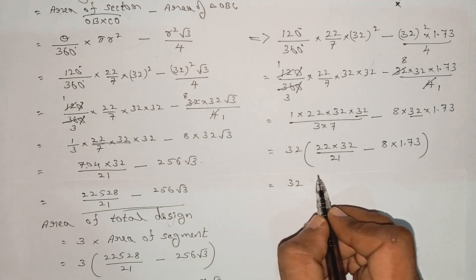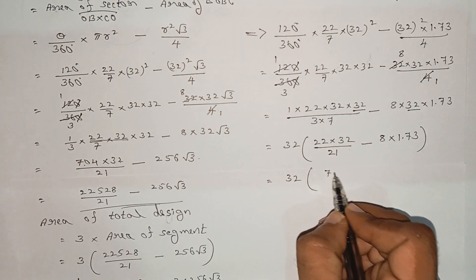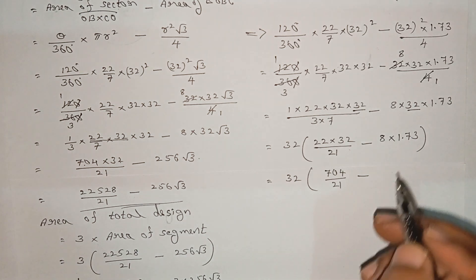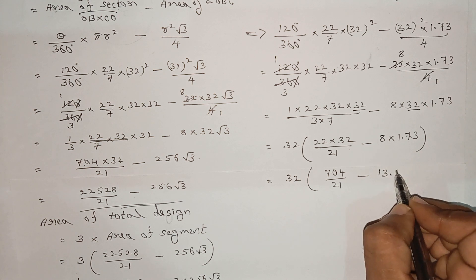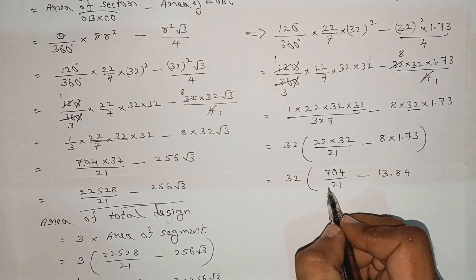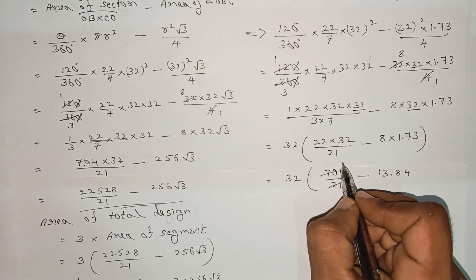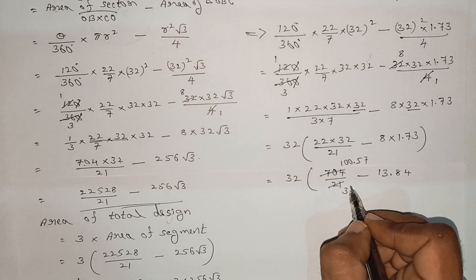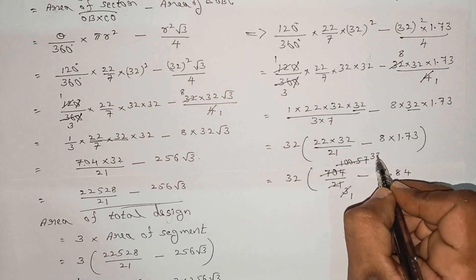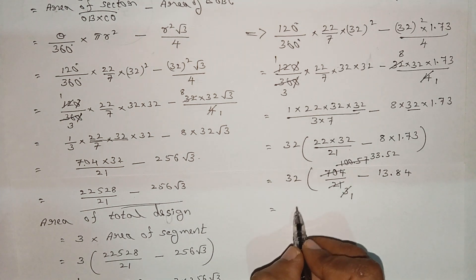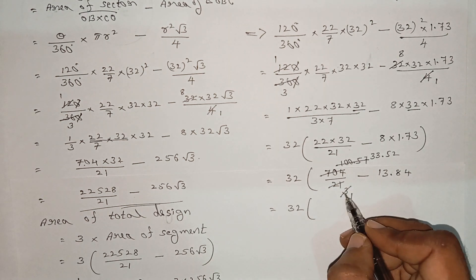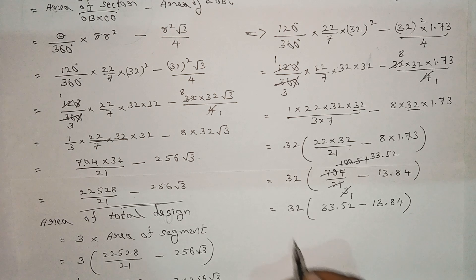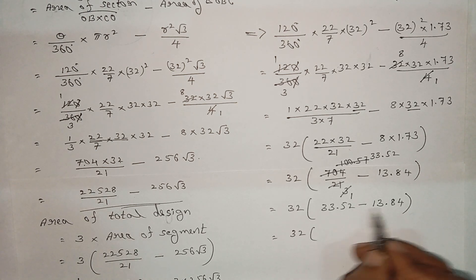Next step: 22 into 32 equals 704, divided by 21. Minus multiply: answer is 13.84 divided by 7, then 3, 21, divided by 7 giving 33.52. Further steps: 30.5 divided by 2 minus 30.84 divided, minus 70 subtraction, arriving at the final numerical answer.